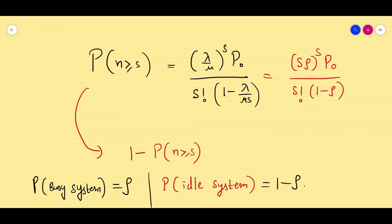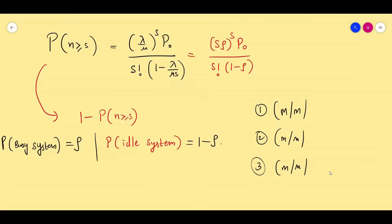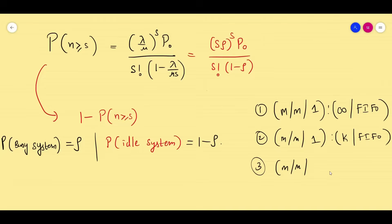Keep all these formulas in mind and you can easily solve the problems in the exam. According to our syllabus, we have only three models. In all three, arrival rate is Poisson and service rate is exponential. Model 1 is single server with infinite capacity FIFO; model 2 is single server with finite capacity FIFO; and model 3 — what we saw here — is multi-server with infinite system capacity FIFO. You can check the fifth unit playlist for all the problems. Thank you for watching — we'll meet in the problem video. Good luck, students.